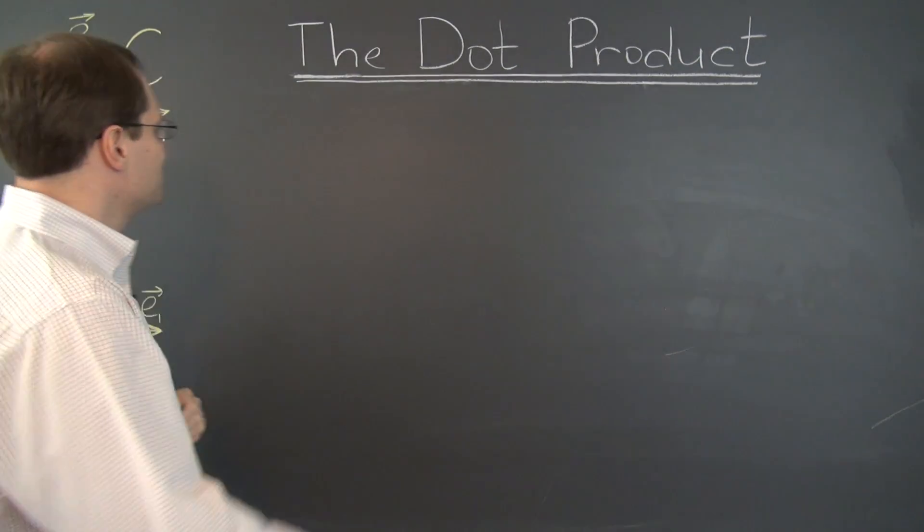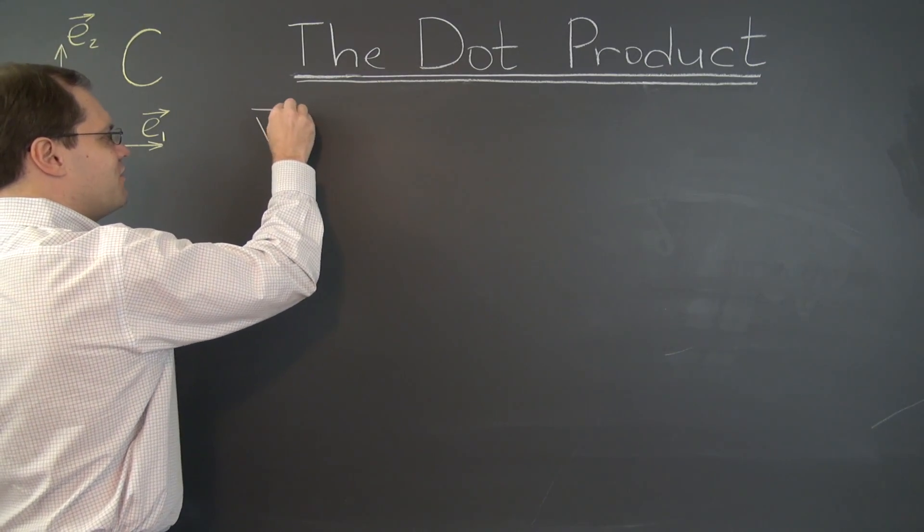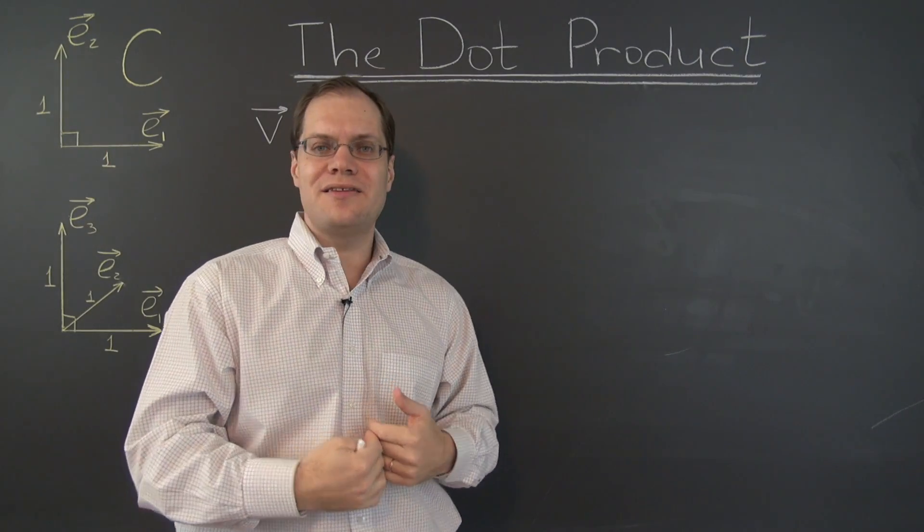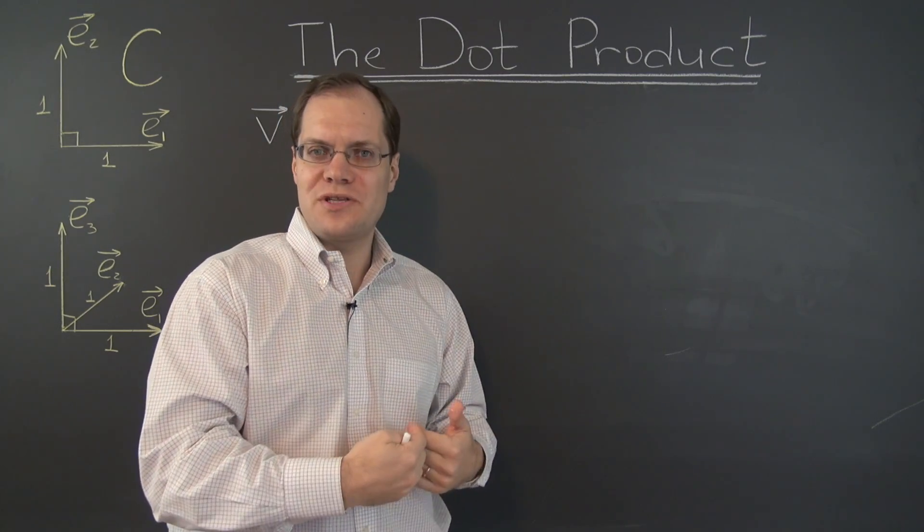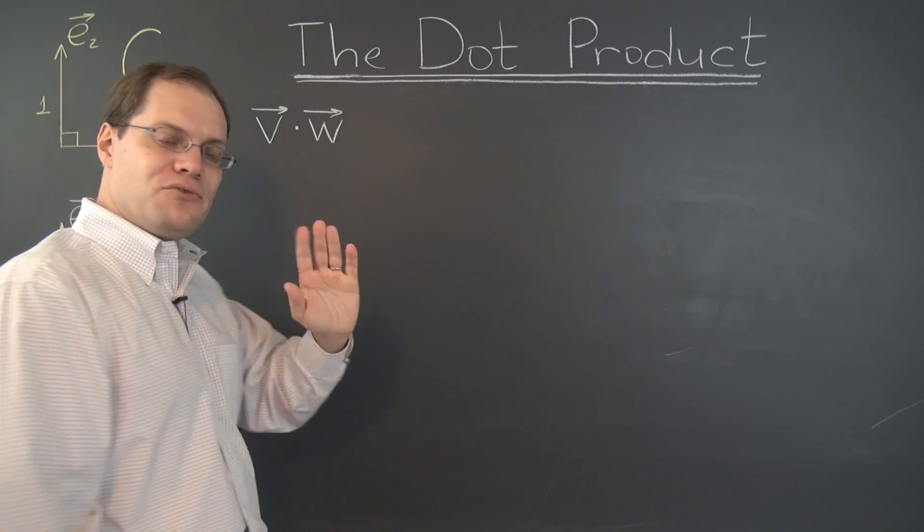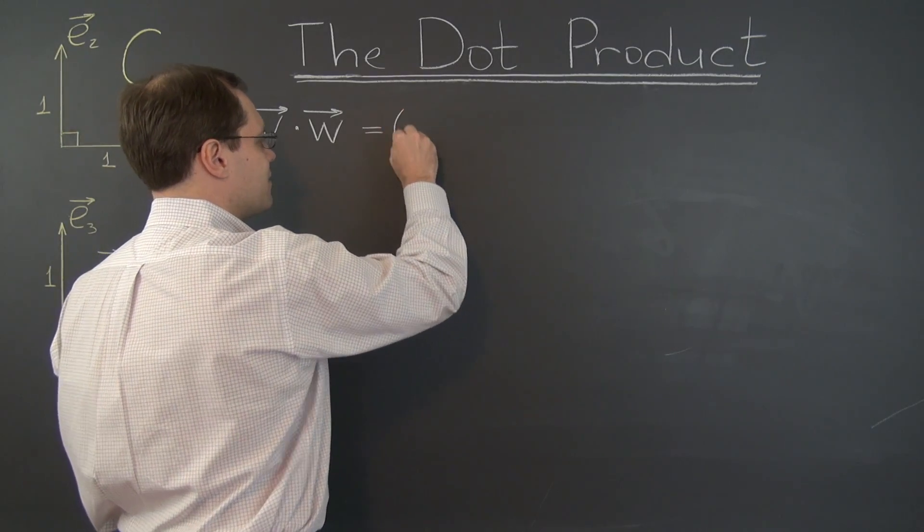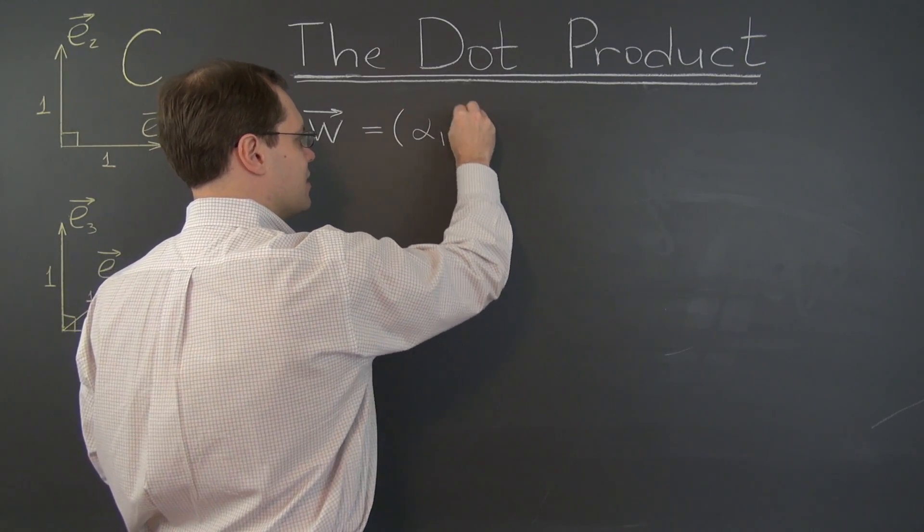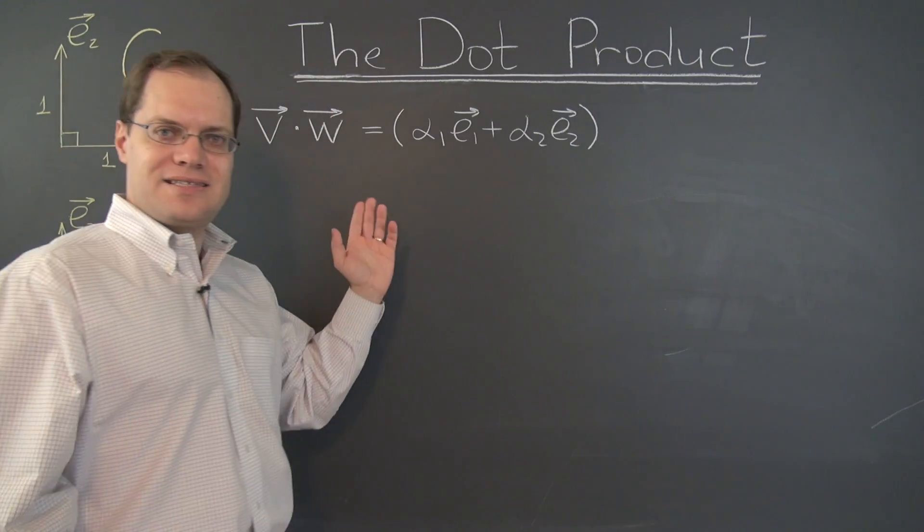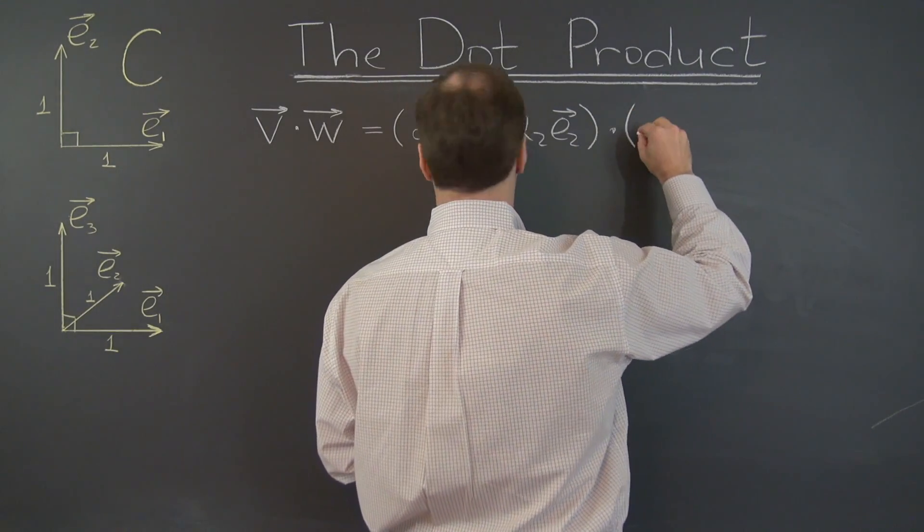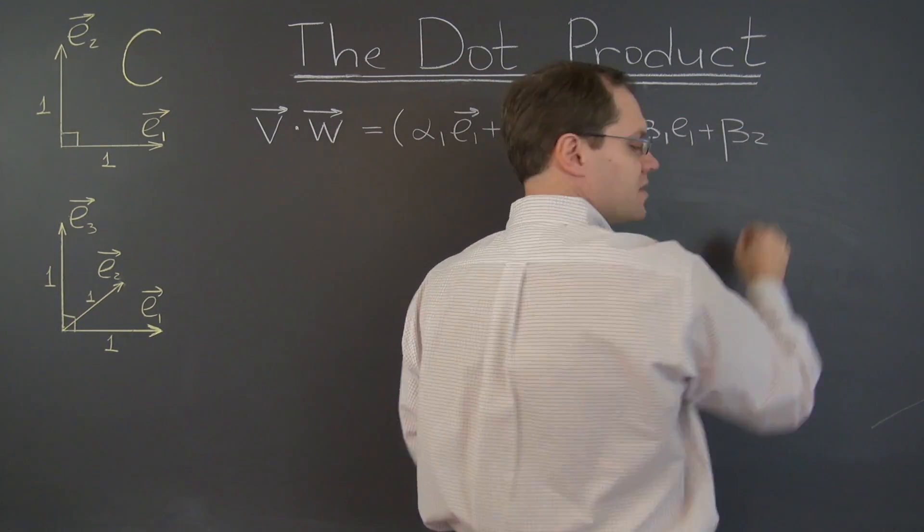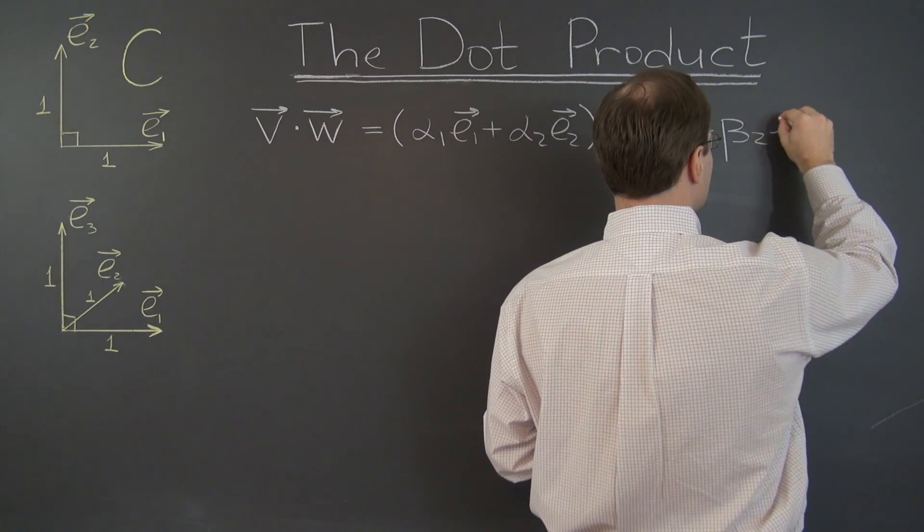Alright. Here we go with the second proof. We have to evaluate V dotted with W. And now we'll actually go from its definition. Rather than arriving at its definition, we'll start with the definition. This is the length of V times the length of W times the cosine of the angle between them. But we won't use it directly. We'll remember that the V is alpha 1 E1 plus alpha 2 E2. And W is beta 1 E1 plus beta 2. Am I fitting? Oh yeah. Plenty of space. Beta 2 E2.